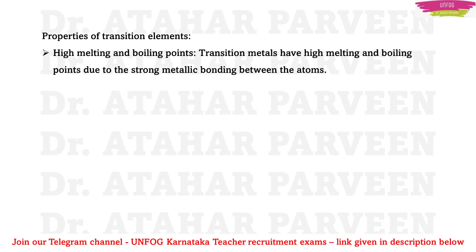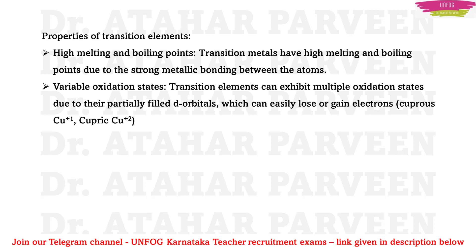Transition elements have high melting and boiling points because of strong metallic bonding between atoms. Because of that strong metallic bonding, much heat must be provided to melt these elements or to make them boil. That is why we say they have high melting points and high boiling points. Another speciality of transition elements is that they have variable oxidation states.